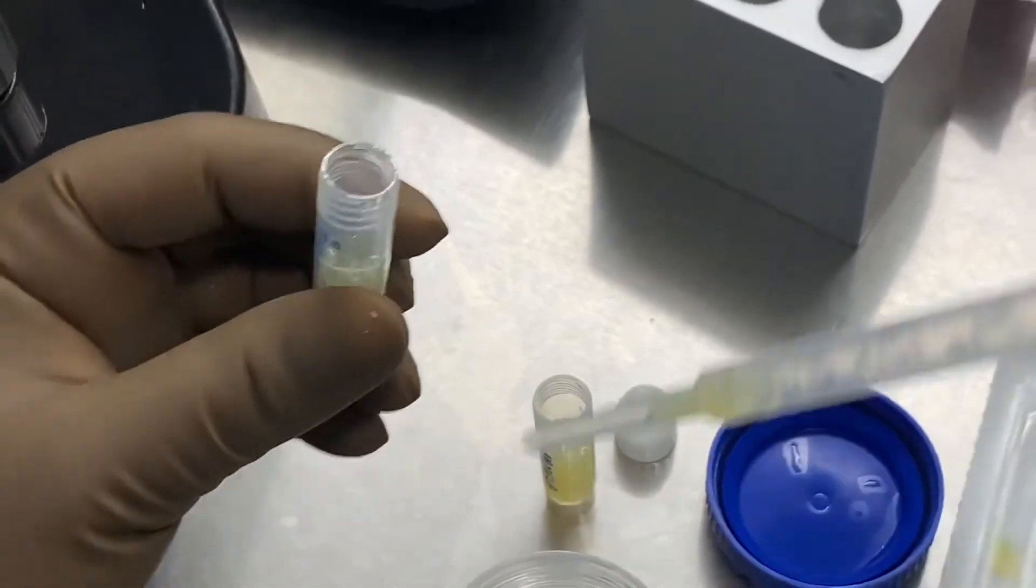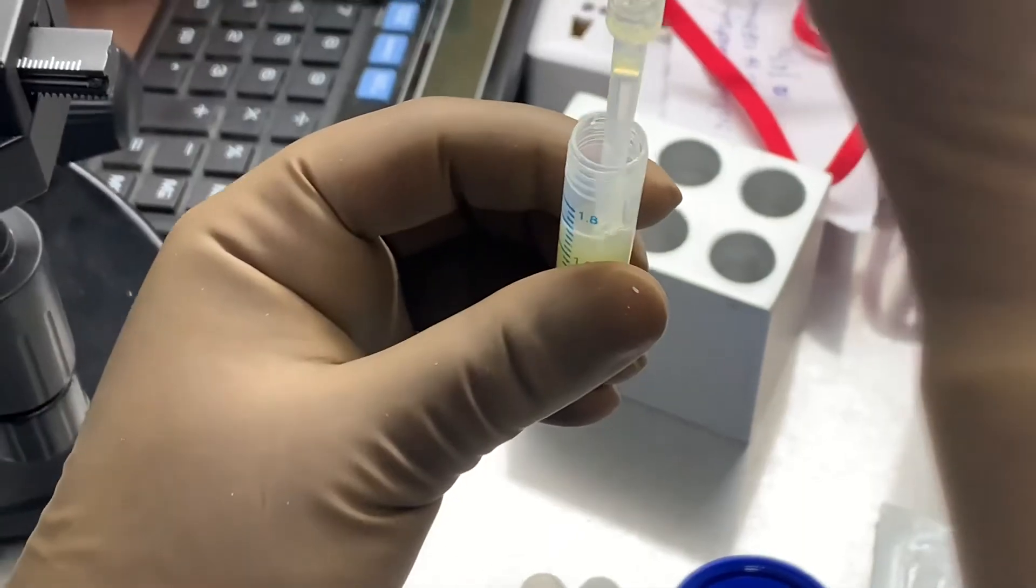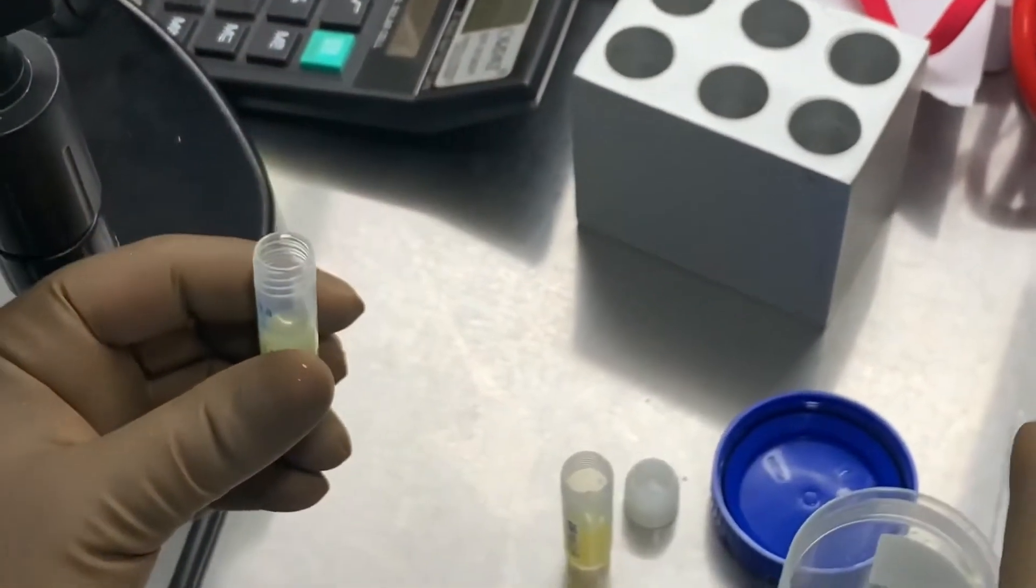So what we need to do is keep the semen with cryoprotectant, this particular mixture inside this cryovial in room temperature for 10 minutes.